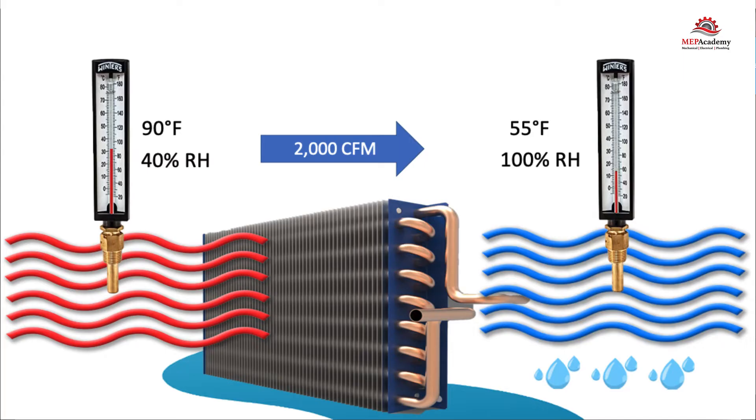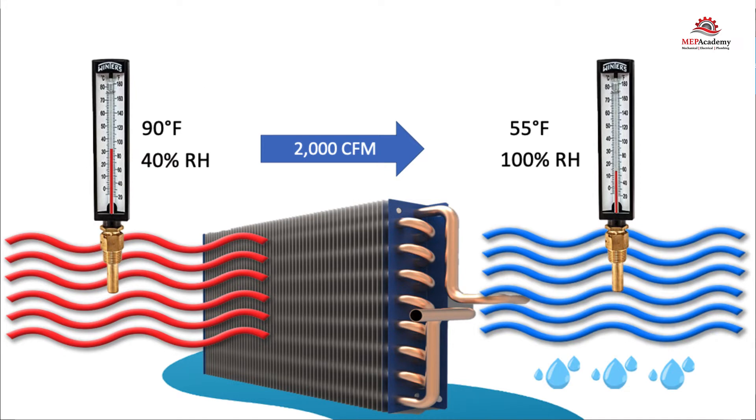Step 2 is to put all the known values into our formula and make the calculation. We have our formula of Q equals CFM times 4.5 times delta H. Now we enter our values.